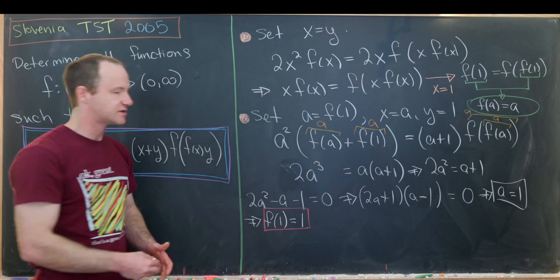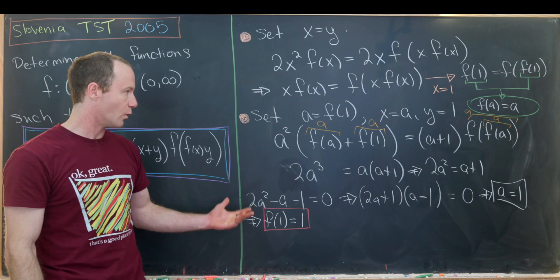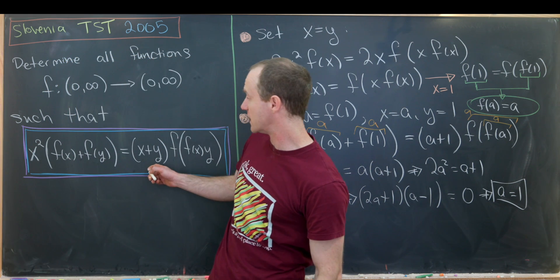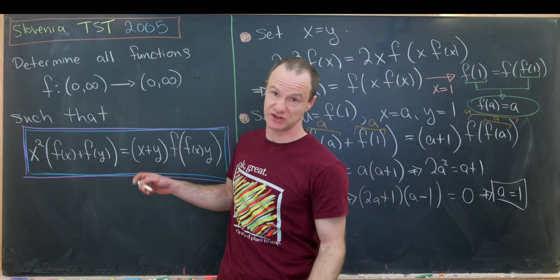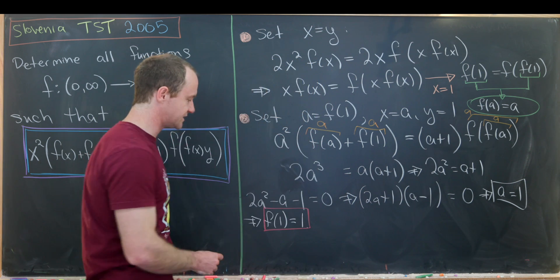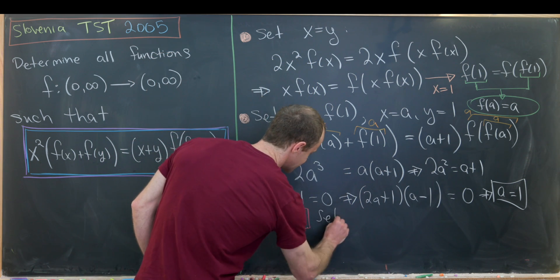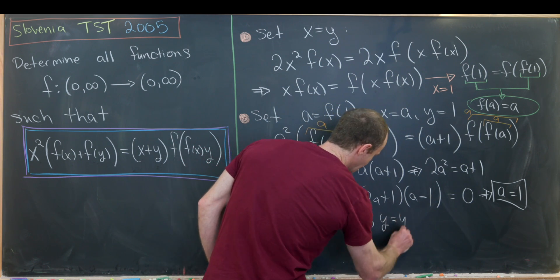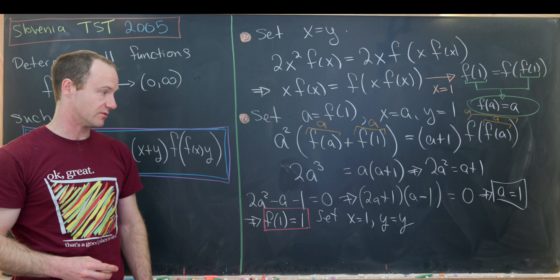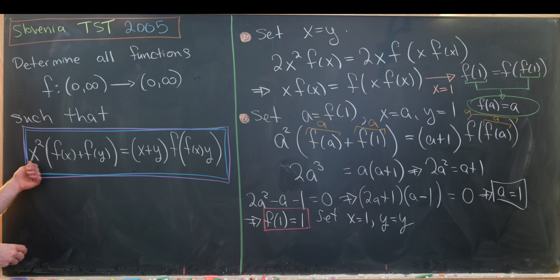And that gives us a lot of information. So now what we'll do is plug in one back into this equation for one of the variables and leave the other variable just as a variable. So I'll say we'll set x equal to one and I'll let y be equal to y, so it's a free variable.